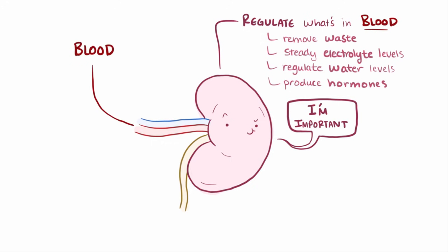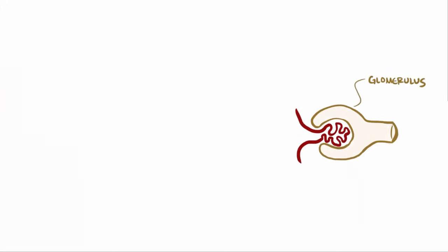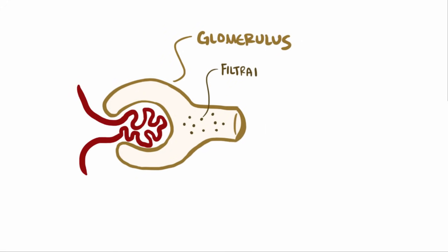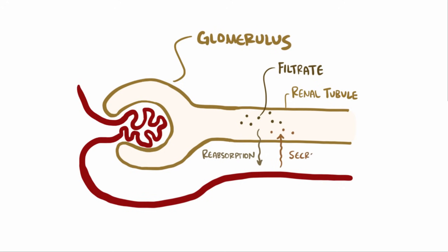Blood gets to the kidneys through the renal artery, into tiny clumps of arterioles called glomeruli, where it's initially filtered, with the filtrate, the stuff that gets filtered out, moving into the renal tubule. Sometimes fluid or electrolytes can move back from the filtrate into the blood, called reabsorption, and sometimes more fluid or electrolytes can move from the blood to the filtrate, called secretion.